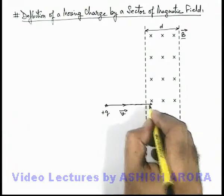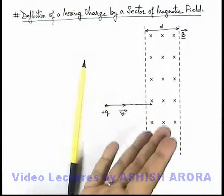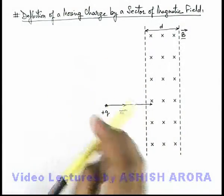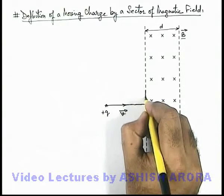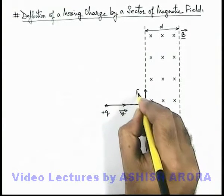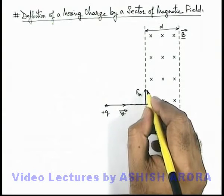We know by right hand palm rule the magnetic force will act on it in upward direction that you can calculate either by Fleming's rule or right hand palm rule. The magnetic force will act on it in upward direction.